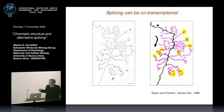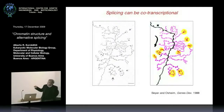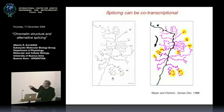Co-transcriptionality started to be seen as a possibility in the late 80s. This is an example from a Drosophila gene seen by EM. The DNA is shown in black, the black dots are Pol2 molecules transcribing the gene in one direction, the star marks the promoter, and the nascent mRNAs are shown in purple. You can see that long before Pol2 molecules reach the end of the gene, we see loops of introns being excised, with spliceosomes visible as dots.